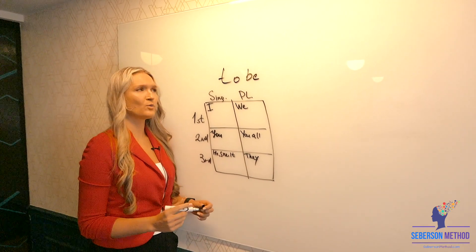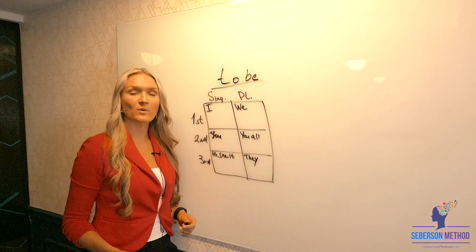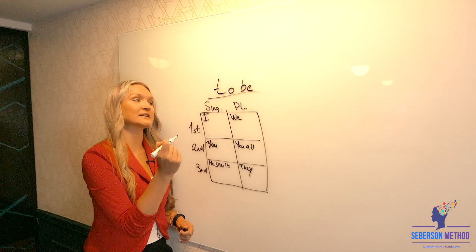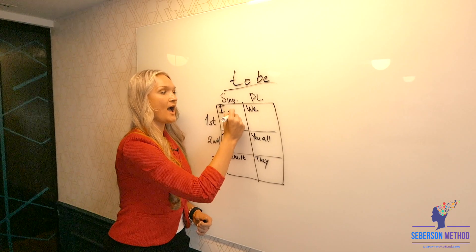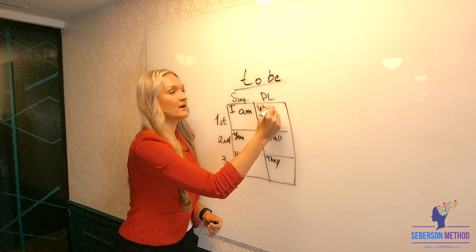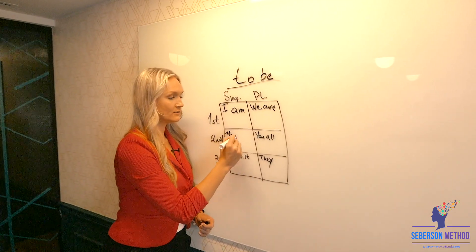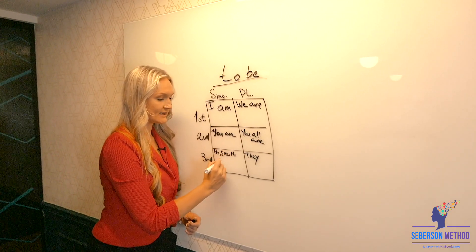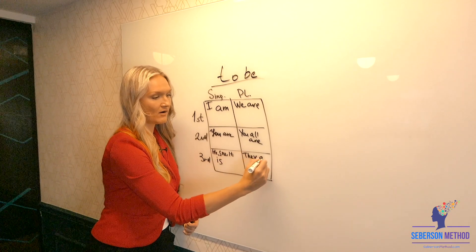Now what does it have to do with this to be verb? Well the to be verb changes its form drastically depending on the subject. I am, we, are, you, are, y'all, are, he, she, it, is, they, are.